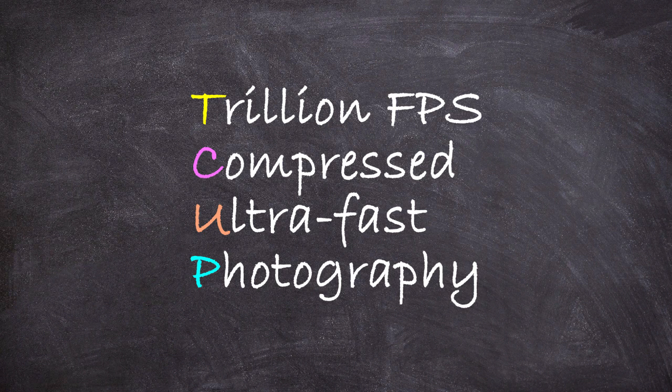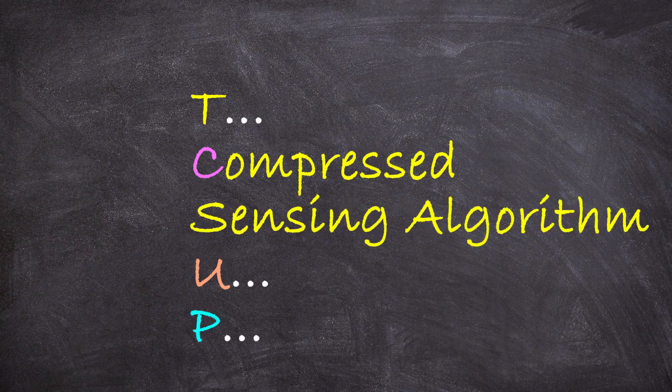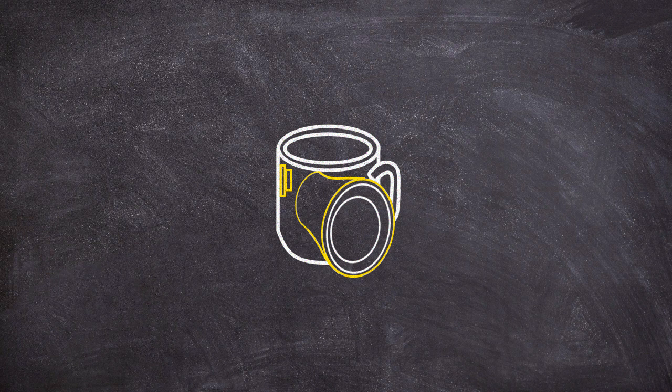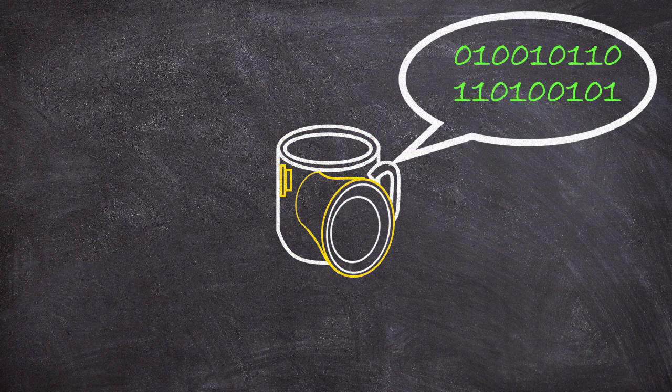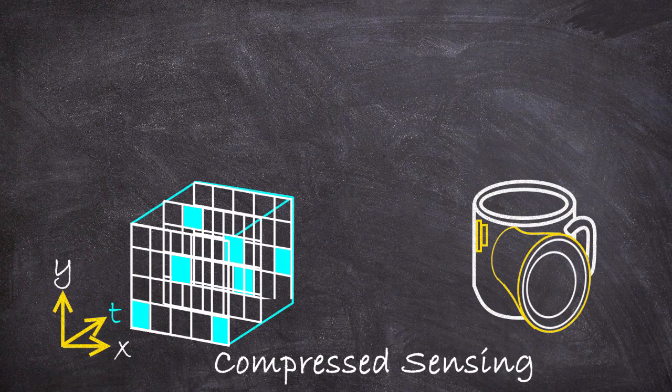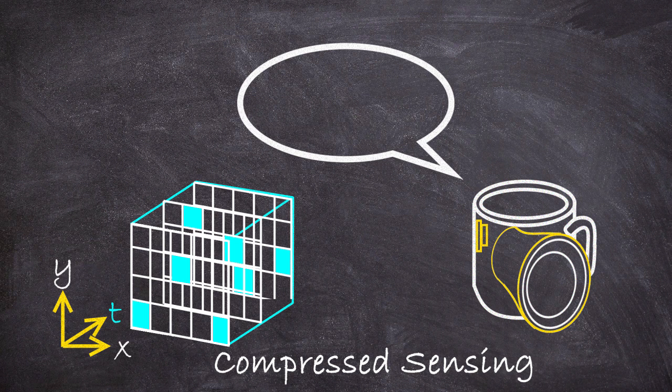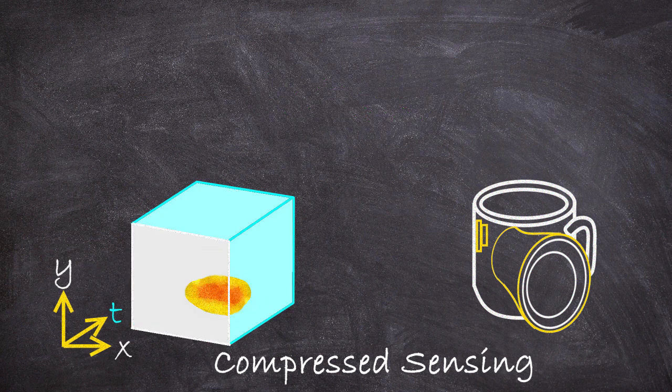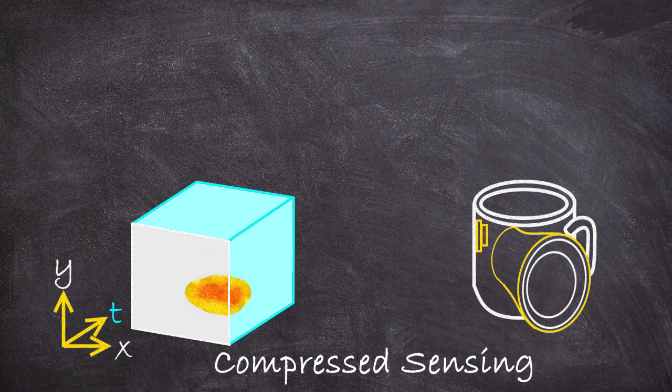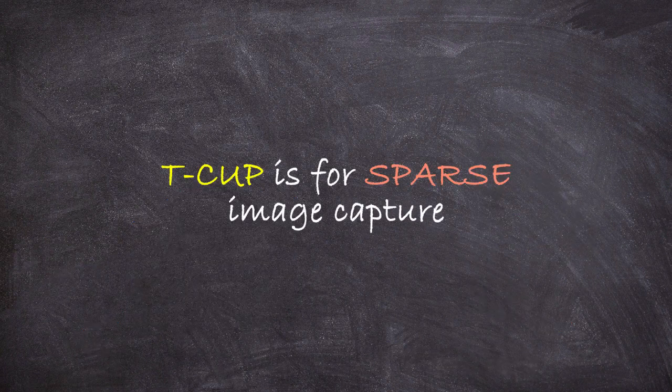Well first we need to understand what's going on with the C in teacup which stands for compressed. This is referring to what is called a compressed sensing algorithm. In a nutshell at the heart of this camera is a computer algorithm that when given only sparse sporadic data points from this data volume can use some very clever math to sleuth out like a detective what probabilistically was the most likely form of the entire data volume.